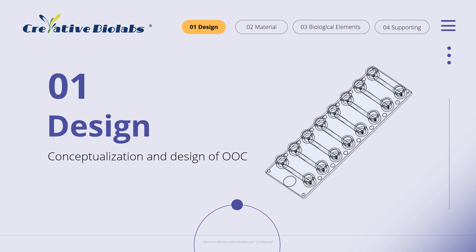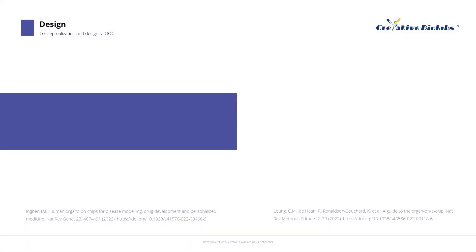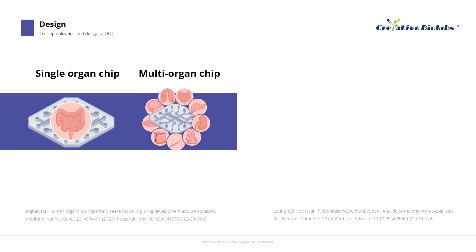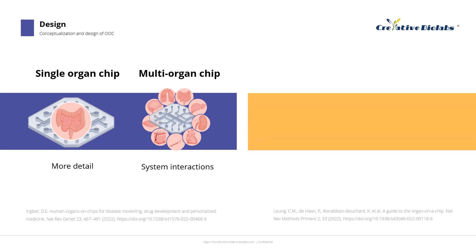The first point is the conceptualization and design of the OOC system. We mainly need to consider the number of organ models and the culture configuration of each organ model. The choice of a single or multi-organ system depends on the functionality required to be a good model of physiological processes. A single OOC provides a more detailed organ model, while a multi-OOC uses less detailed organ models and focuses on the interactions between organs.